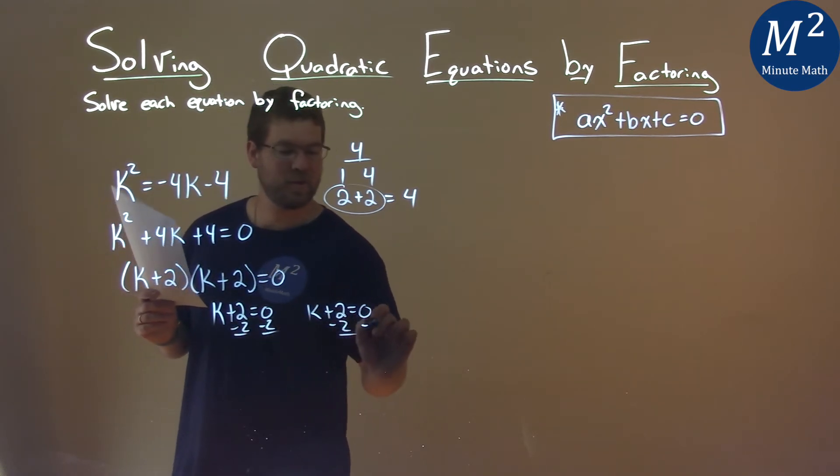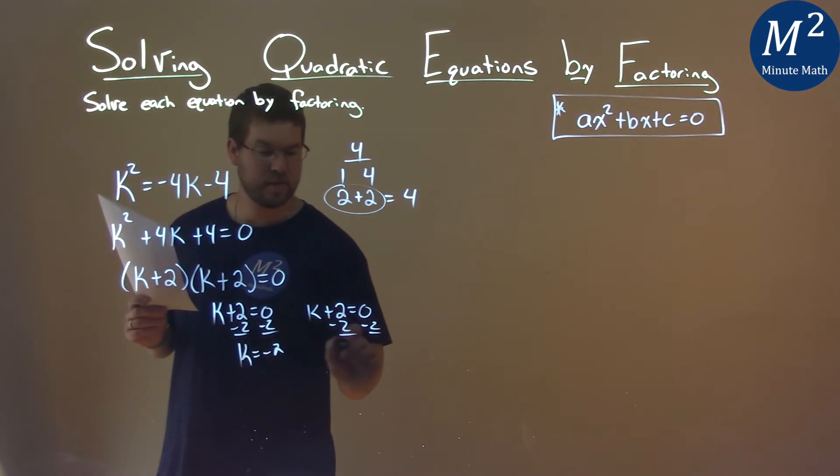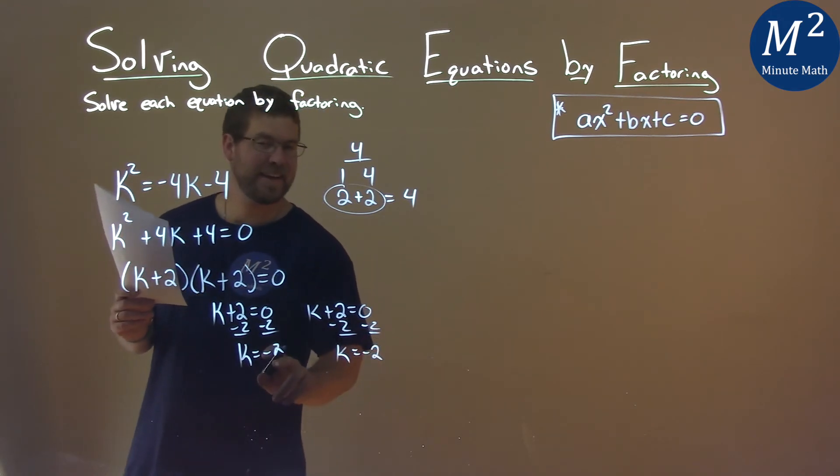Oops, got to do it to both sides there. And k equals 0 minus 2 is negative 2. And k equals negative 2.